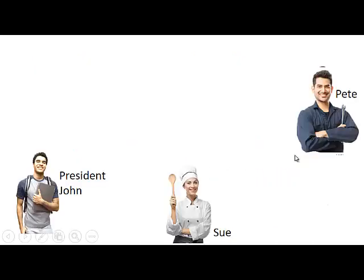So here we have a simple economy consisting of three persons. We have John who is the president, we have Sue who is a cook, and Pete who is a mechanic.